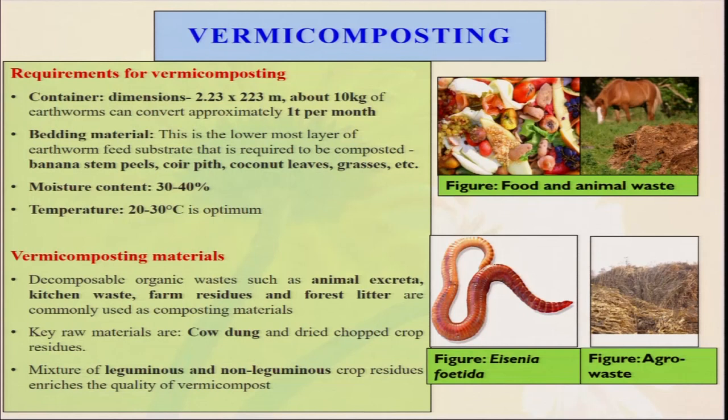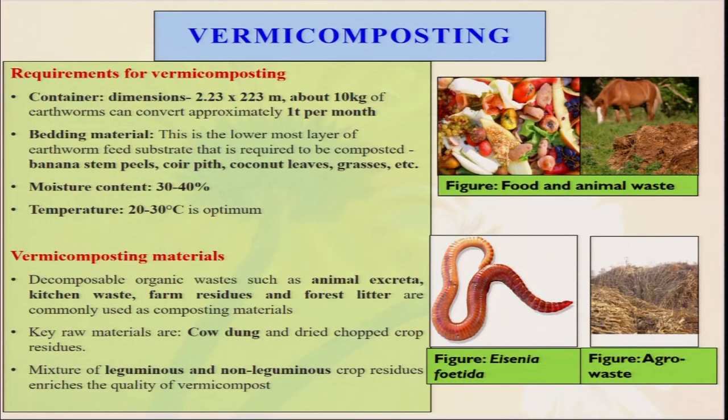Temperature should not be very high — 20 to 30 degrees is optimum, and there should be no direct sunlight on the vermicomposting because it will cause moisture loss and decrease the earthworm population. We also use different types of mesh wire and other things in the composting tank — sometimes birds come to eat the earthworms, and sometimes ants also attract earthworms. So sometimes in the periphery of the vermicomposting tank, we use water so ants cannot directly access. Vermicomposting materials include animal excreta, kitchen waste, farm residue, and forest litter. Cow dung can also be used, and a mixture of leguminous and non-leguminous materials enriches the quality.